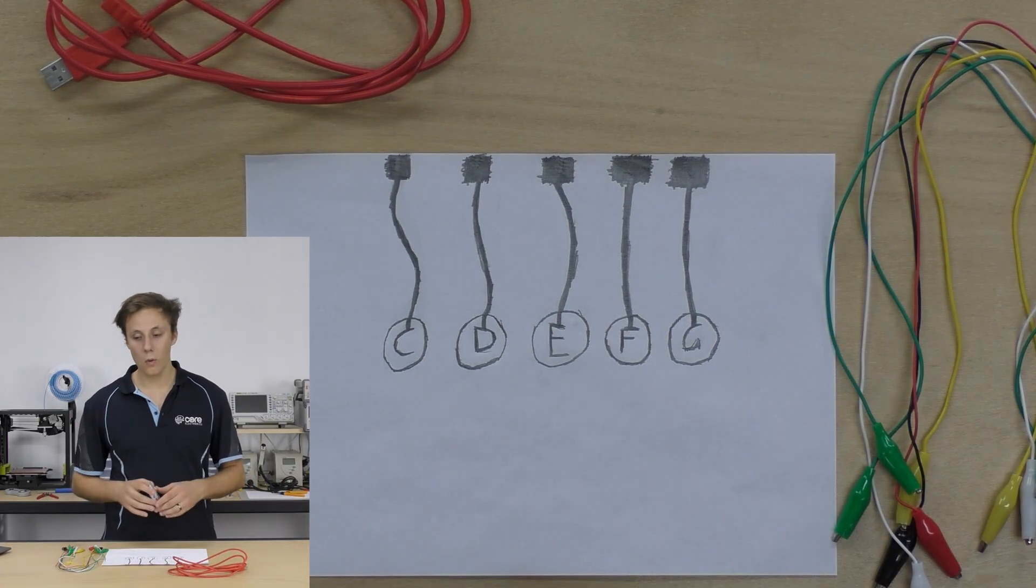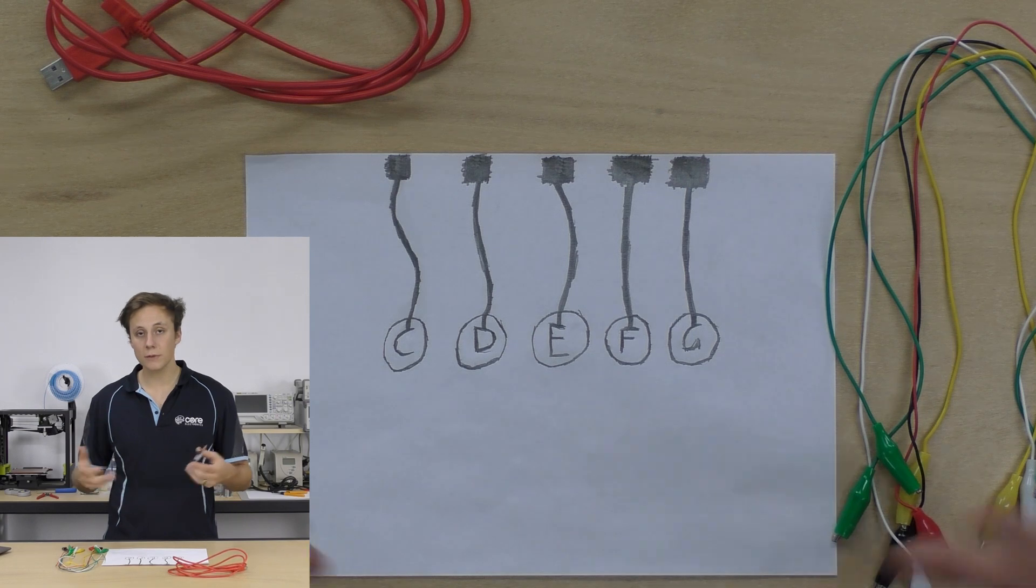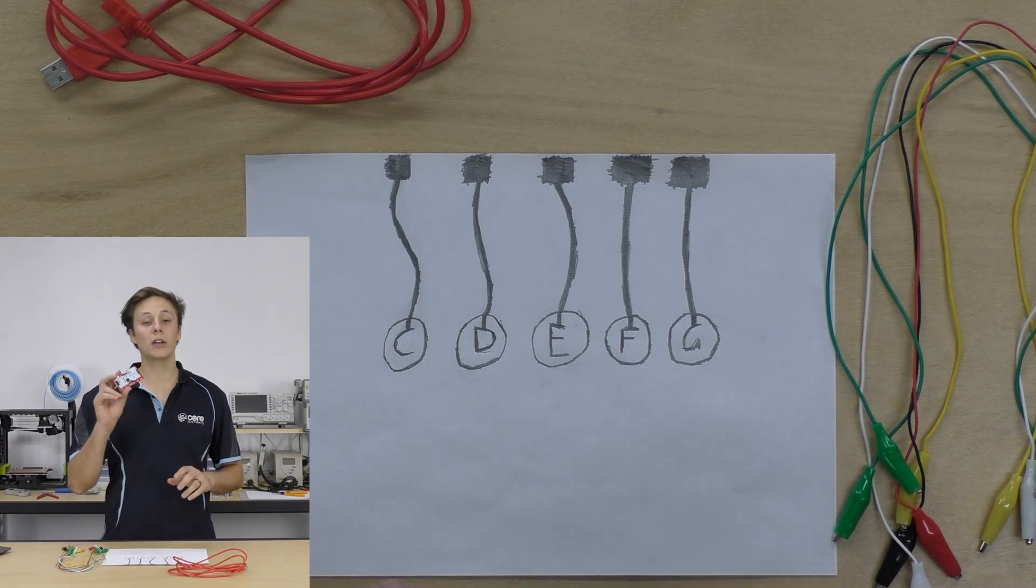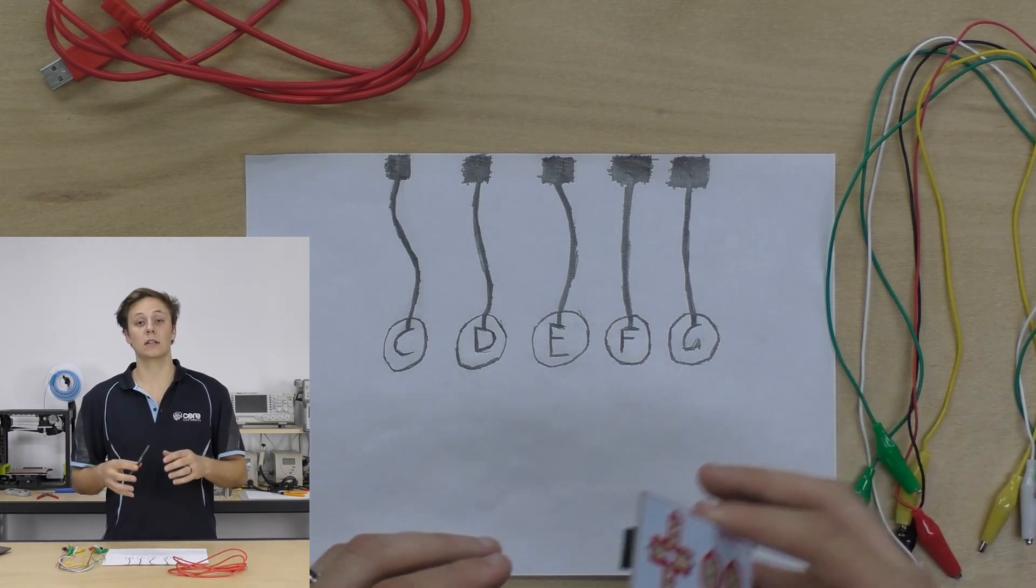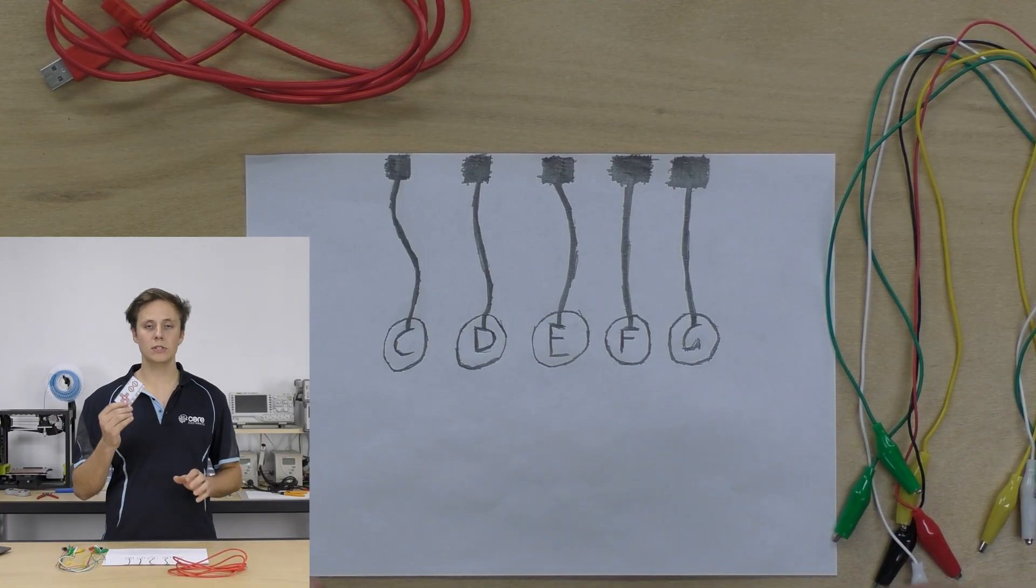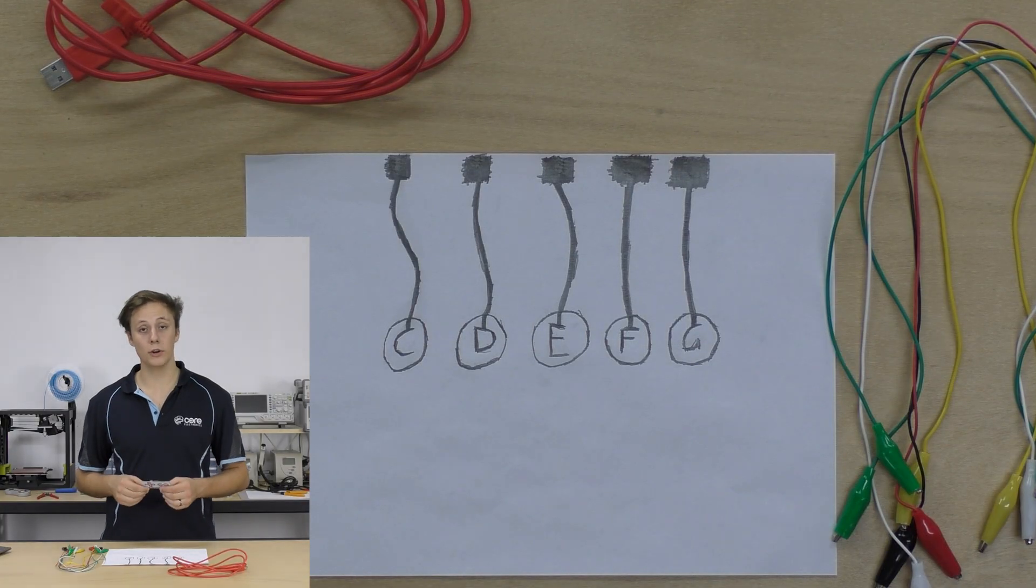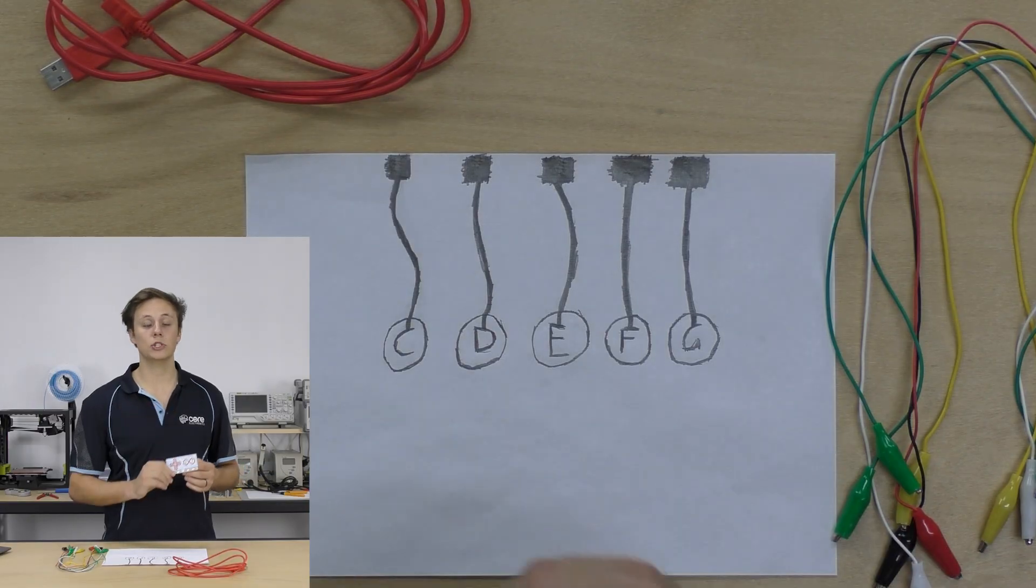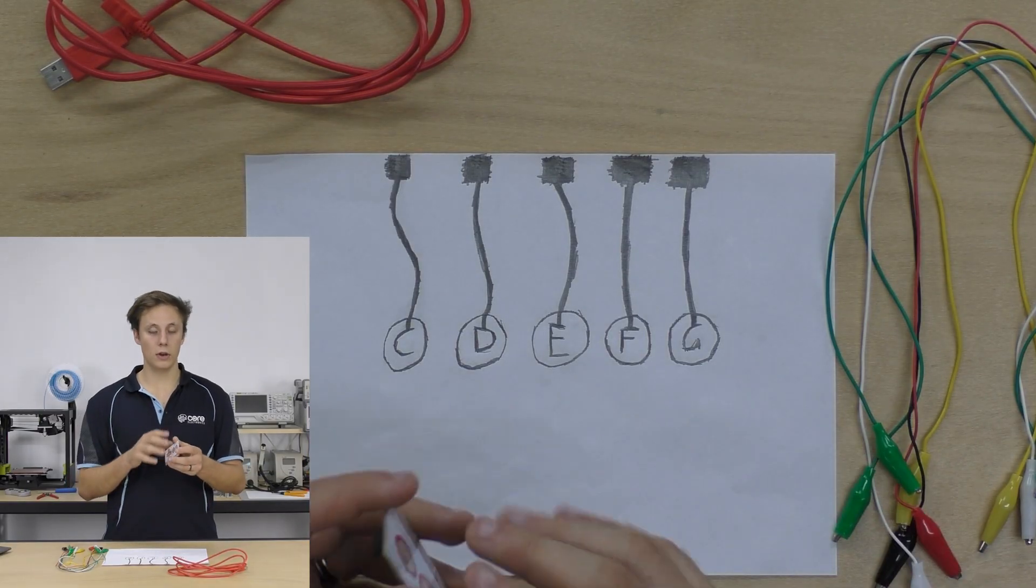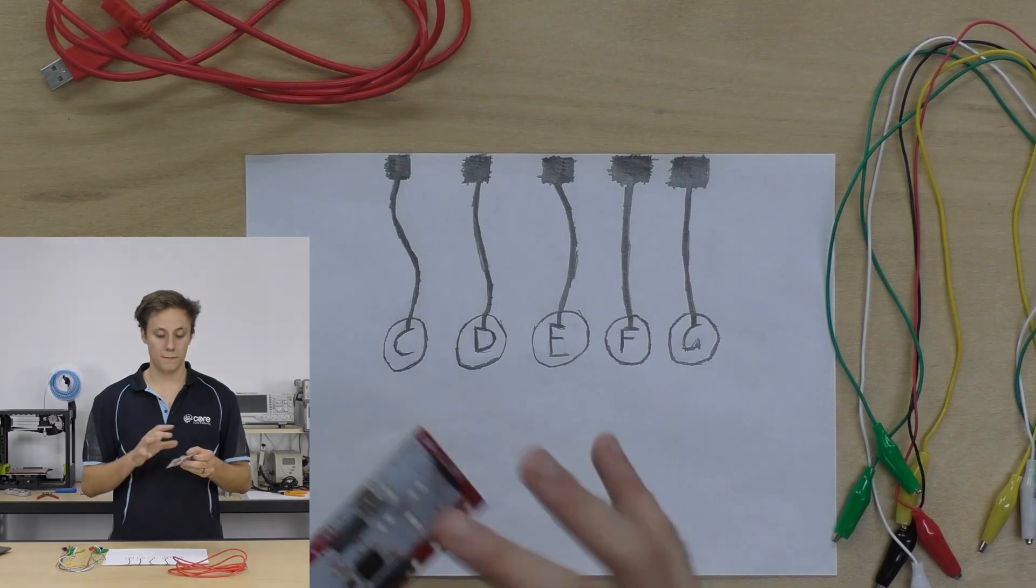You'll need a Makey Makey of course, a pencil, piece of paper, stuff you can find around the house and we're going to use the Makey Makey in its traditional resistive touch mode. So if you programmed it to work with capacitive touch for one of our other projects, check out our resistive touch tutorial which goes through how you can revert to the default firmware on this.